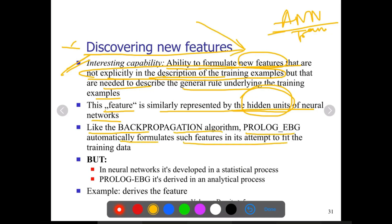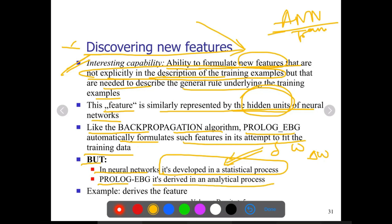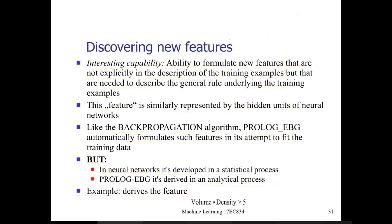EBL's performance is almost equivalent to ANN. Like in the back propagation algorithm, Prolog EBG automatically formulates such features in its attempt to fit the training data — using all positive examples and classifying them properly in all scenarios. But in neural networks this is developed through a statistical process, requiring weights and many other parameters. In the case of Prolog, it is derived in an analytical process — this is a major difference. Here examples drive the feature, such as volume divided by density being greater than five.